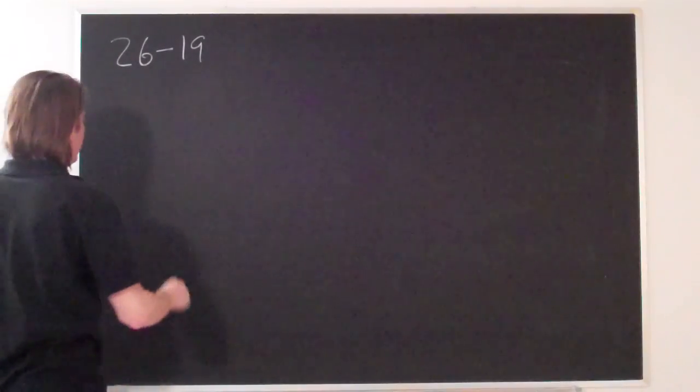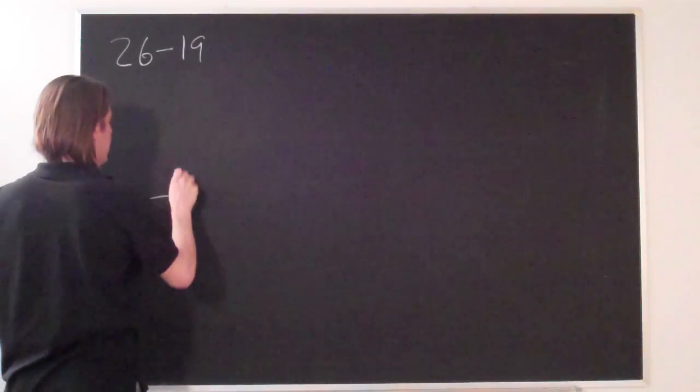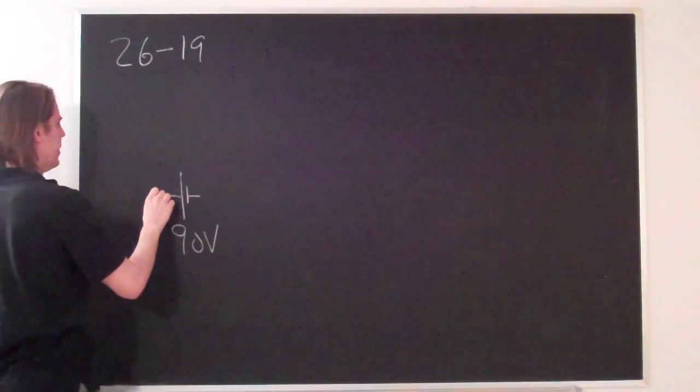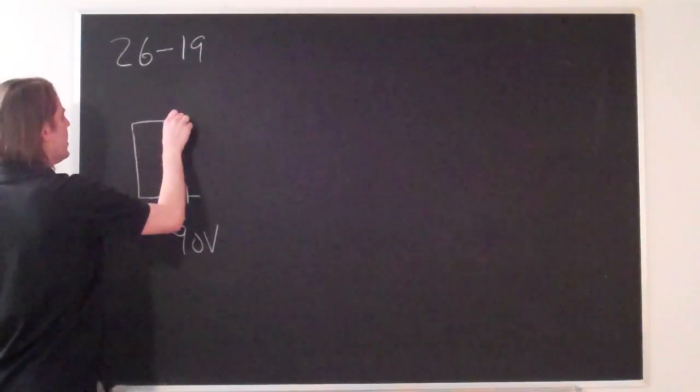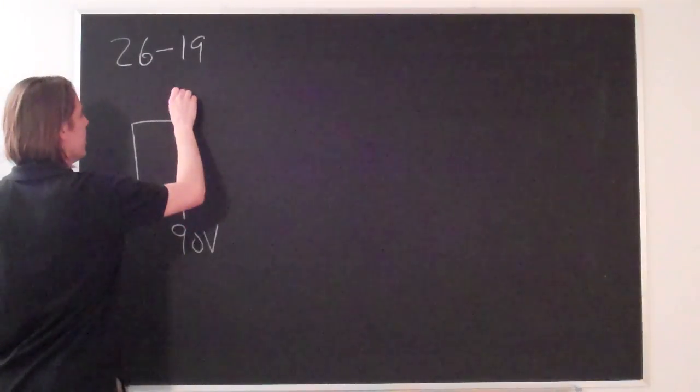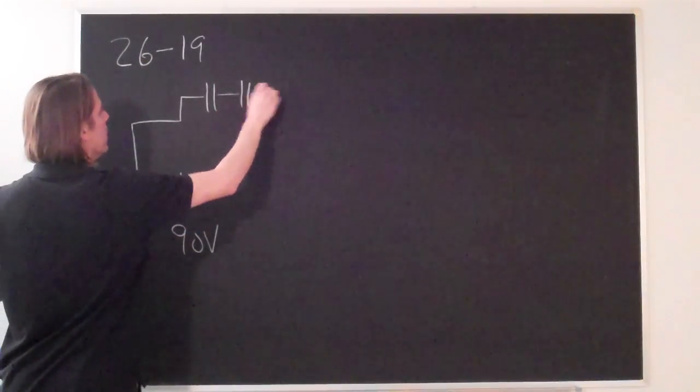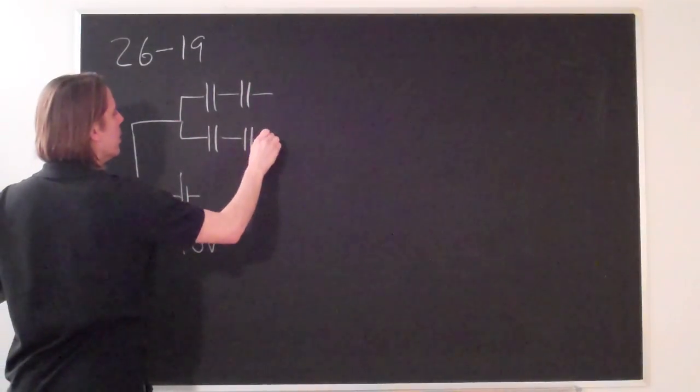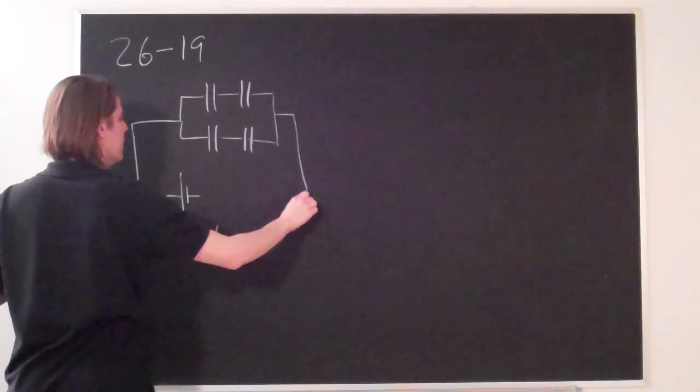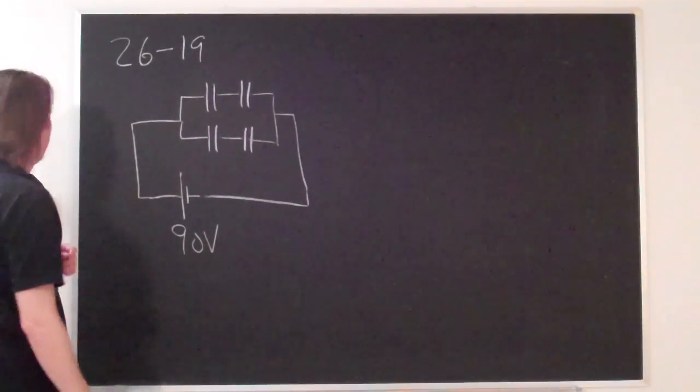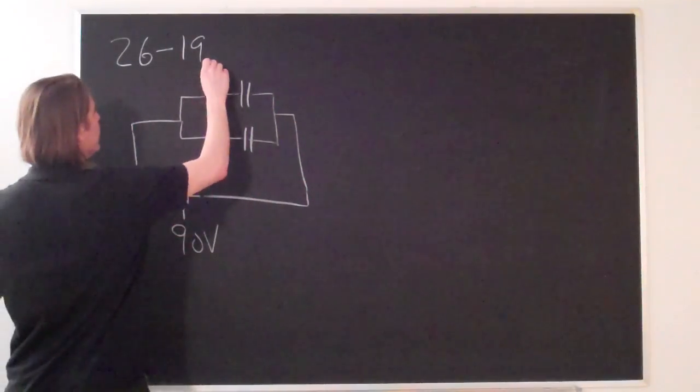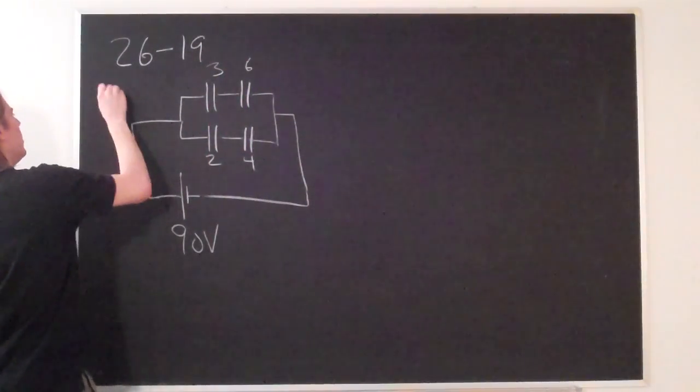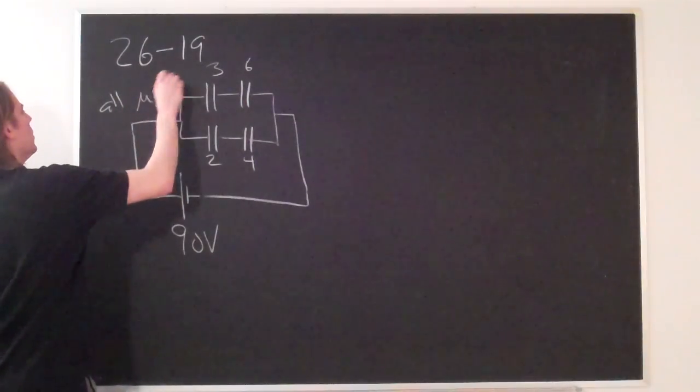Problem 26-19 gives us the following circuit. We've got a 90 volt battery down here, and then we come up to a network of capacitors. The values are 3, 6, 2, and 4, and those are all in microfarads.